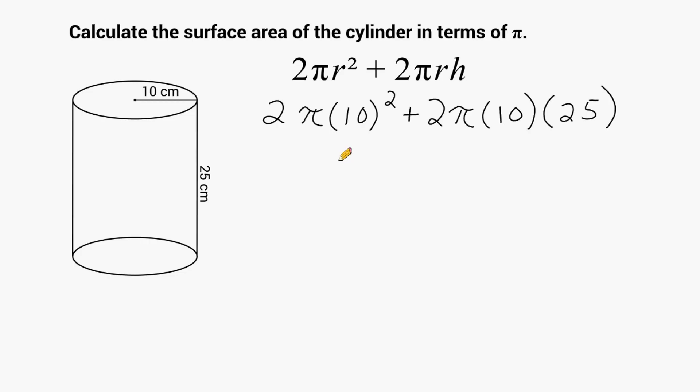All right, now that we have plugged all of our values into the appropriate places, what we're going to do next is simplify the left-hand part of our equation before this plus sign here, and simplify everything to the right-hand side of our plus sign. So we're going to take 10 to the second power, which is 100, and then we take 100 and multiply that by 2, which is 200. And we have to take 200 and multiply that by pi. And 200 times pi will give us the area of the two circular surfaces.